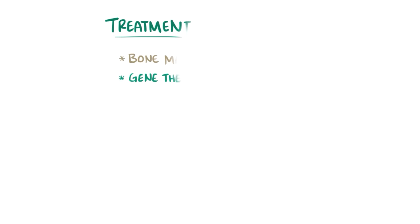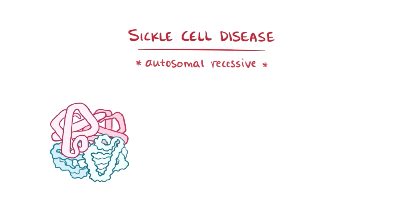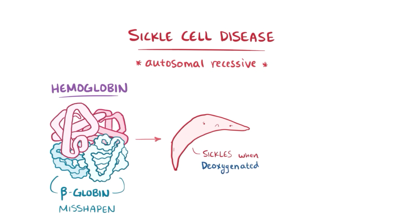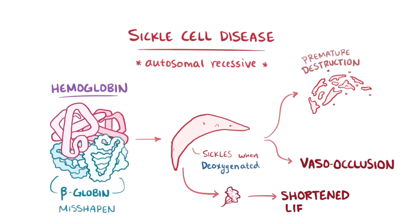As a quick recap, sickle cell disease is an autosomal recessive genetic disease where the beta globin subunit of hemoglobin is misshapen, which causes red blood cells to sickle when deoxygenated, and this leads to their premature destruction as well as vasoocclusion. Furthermore, multi-organ damage is the end result from ongoing sickling and hypoxic damage to the body's important organs, resulting in a shortened lifespan.